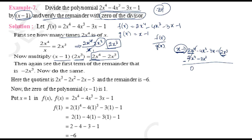2x⁴ minus 2x⁴ cancels to zero. We write the minus symbol. Minus into minus becomes plus. So we have minus 4x³ plus 2x³. The dominant sign is negative, so we keep the minus sign and 4 minus 2 is 2, giving minus 2x³. Bring down to get minus 2x³ - 3x - 1.